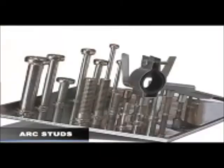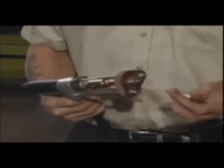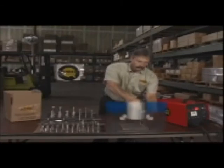Arc stud welding is generally used to weld large diameter fasteners to more porous and thicker base metals. Stud fasteners are available in many sizes and shapes. A fastener and ceramic ferrule are loaded into the welding gun and firmly placed against the work surface under spring tension.